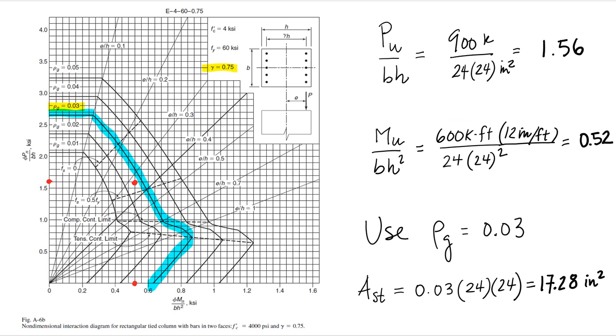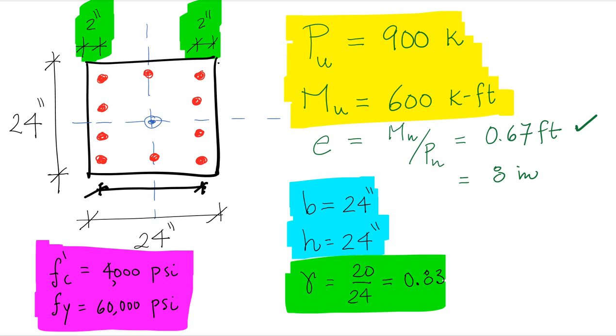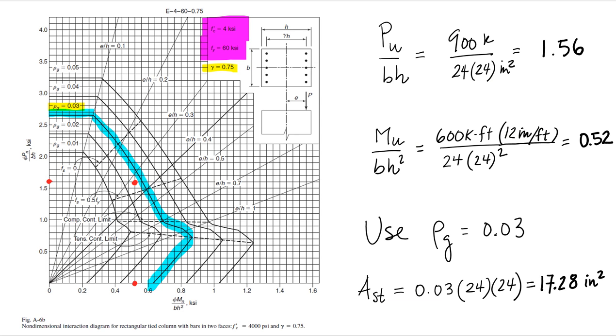In this case, as we have mentioned, for 4,000 psi concrete and 60,000 psi yield stress of steel, this diagram has a gamma of 0.75. Our actual value of gamma is 0.83. So we want to enter into a diagram with a gamma that is equal or lower than the gamma that we actually have in our column because that's conservative.